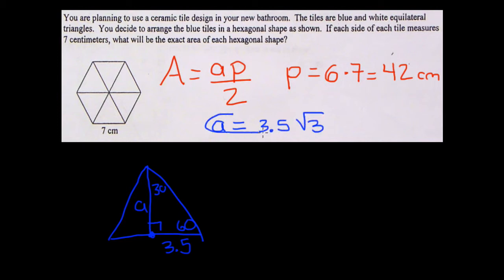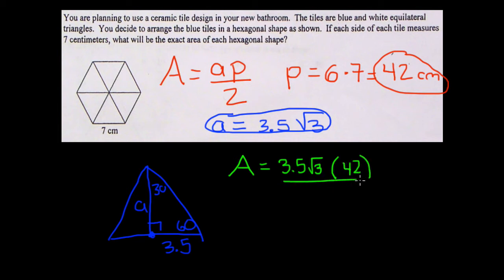So now we have the apothem here, we have the perimeter up here, and all of these can be separate questions on their own. Now we want to combine the two answers together, use this formula right here to find the area. So area equals apothem, 3.5 radical 3, times the perimeter, 42, divided by 2.